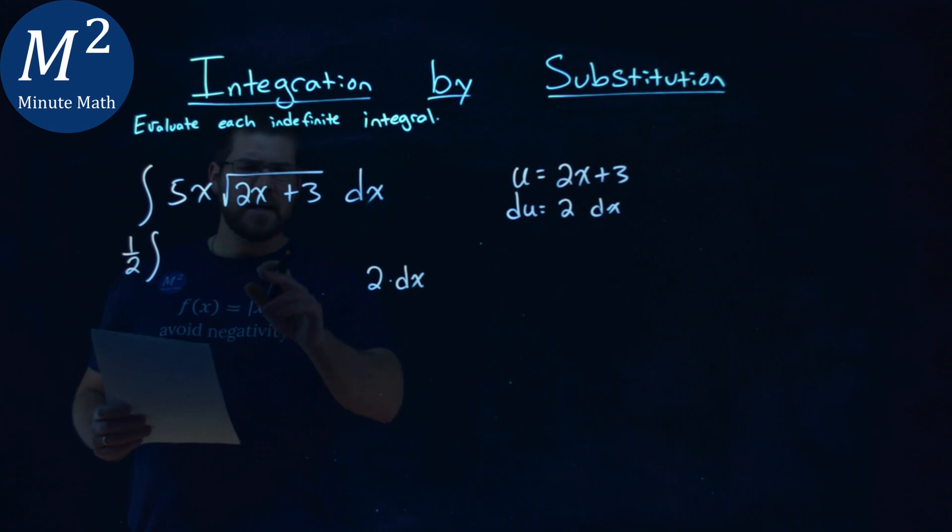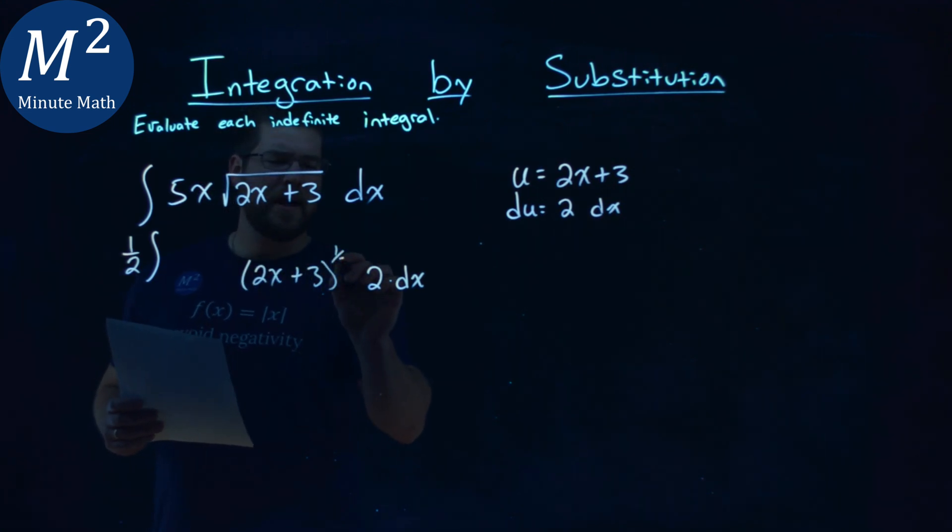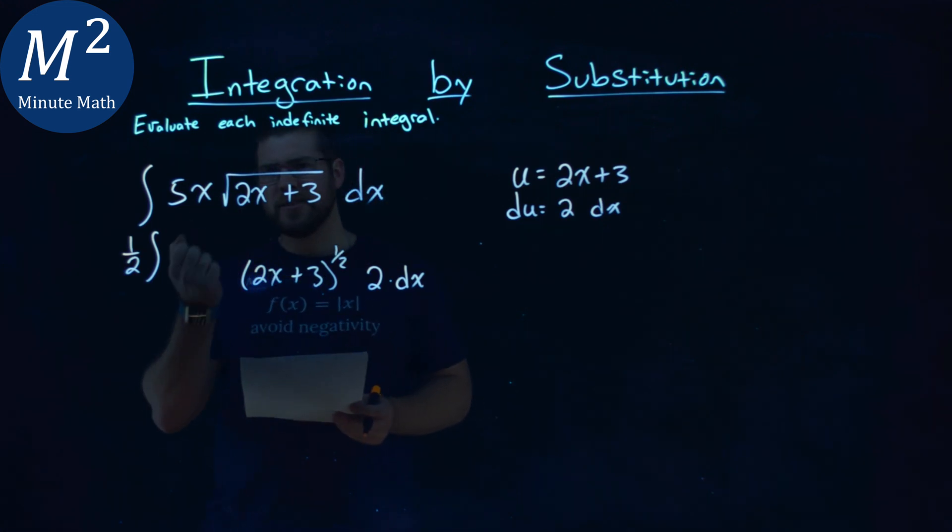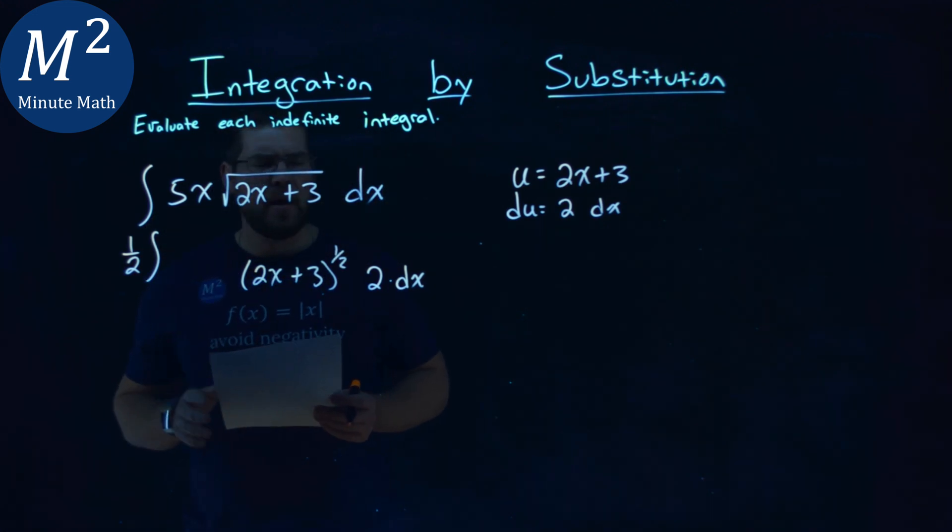Inside this square root, I'm going to rewrite that to be a 2x plus 3, and I'll write to the 1 half power just so we have a place value, because I can put a u in right there. So far, so good. But I have a 5x, and what can I do with that?